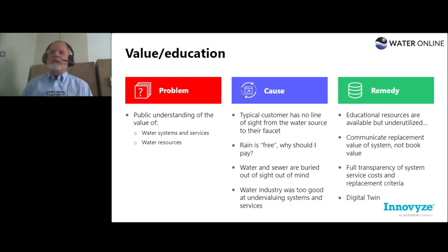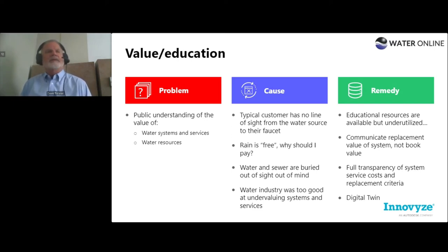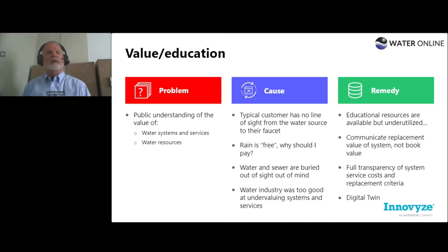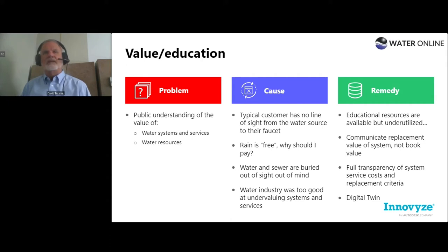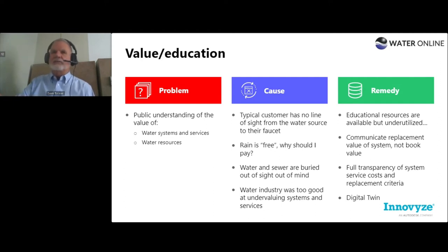Communicating replacement value is a key thing to look at. It really comes down to full transparency of your system — service costs and replacement criteria. The public doesn't understand the cost of barricading streets, proper trenching, pipe removal, labor, and fuel. Those things all add up. Replacement costs are a key thing to communicate about the value of the system customers are paying for. And the digital twin appears again here as a potential remedy — we'll talk about that a little later.